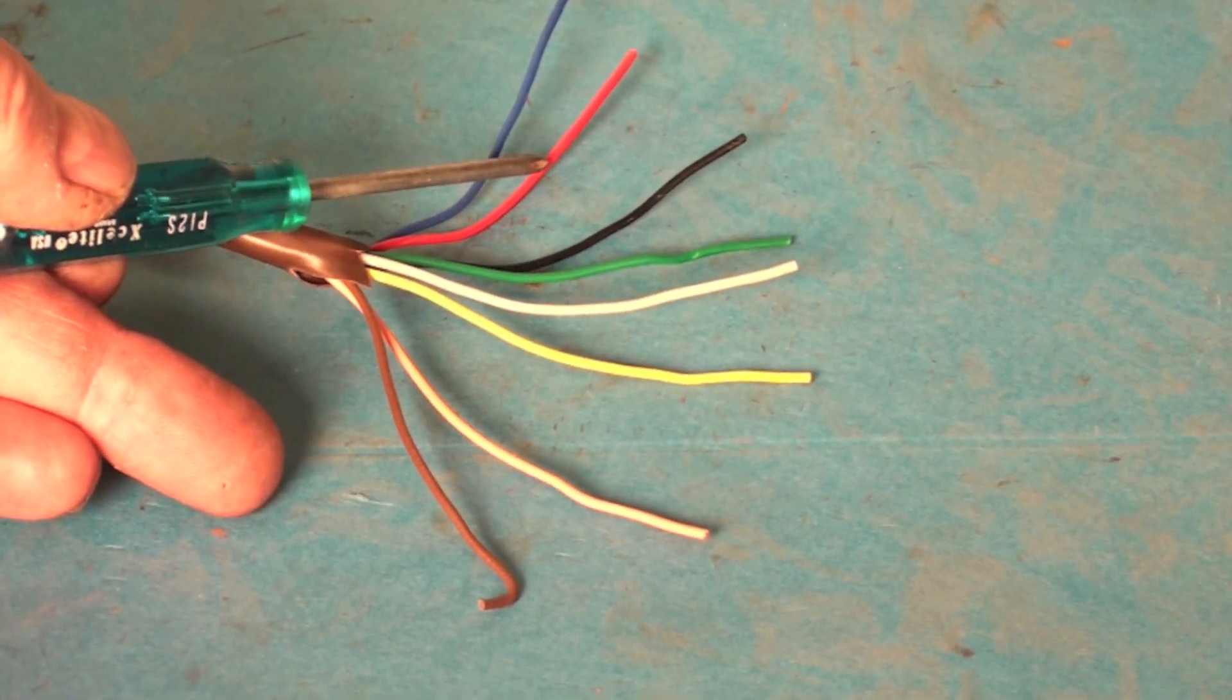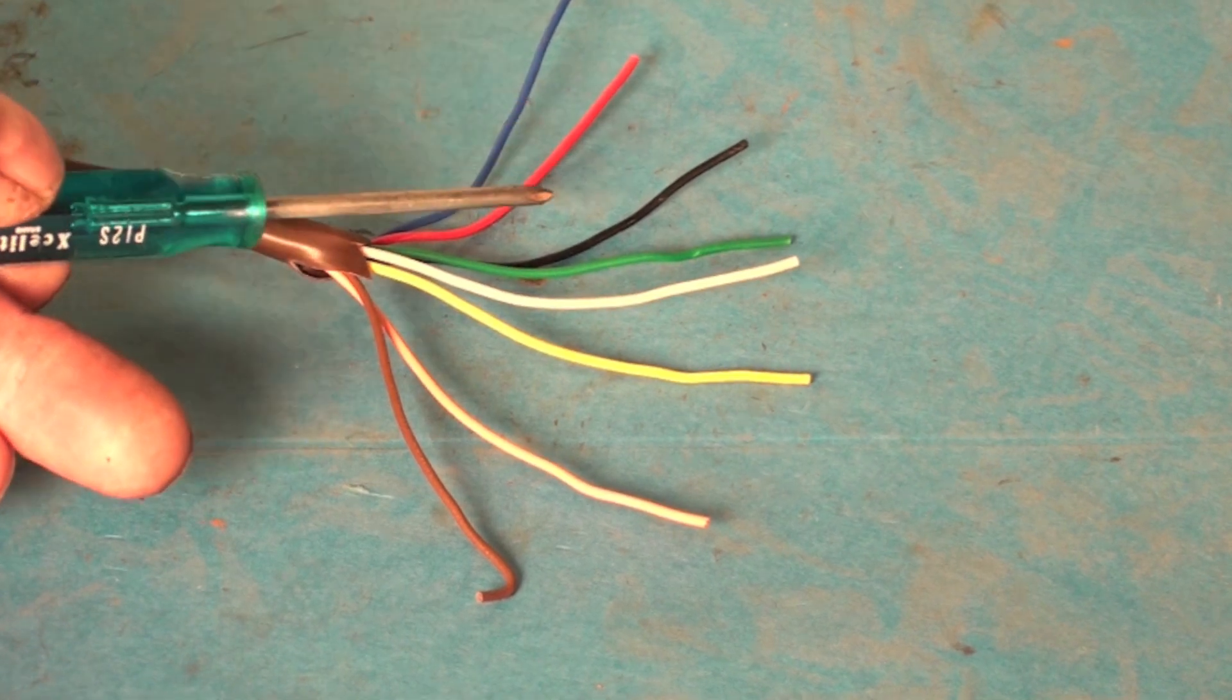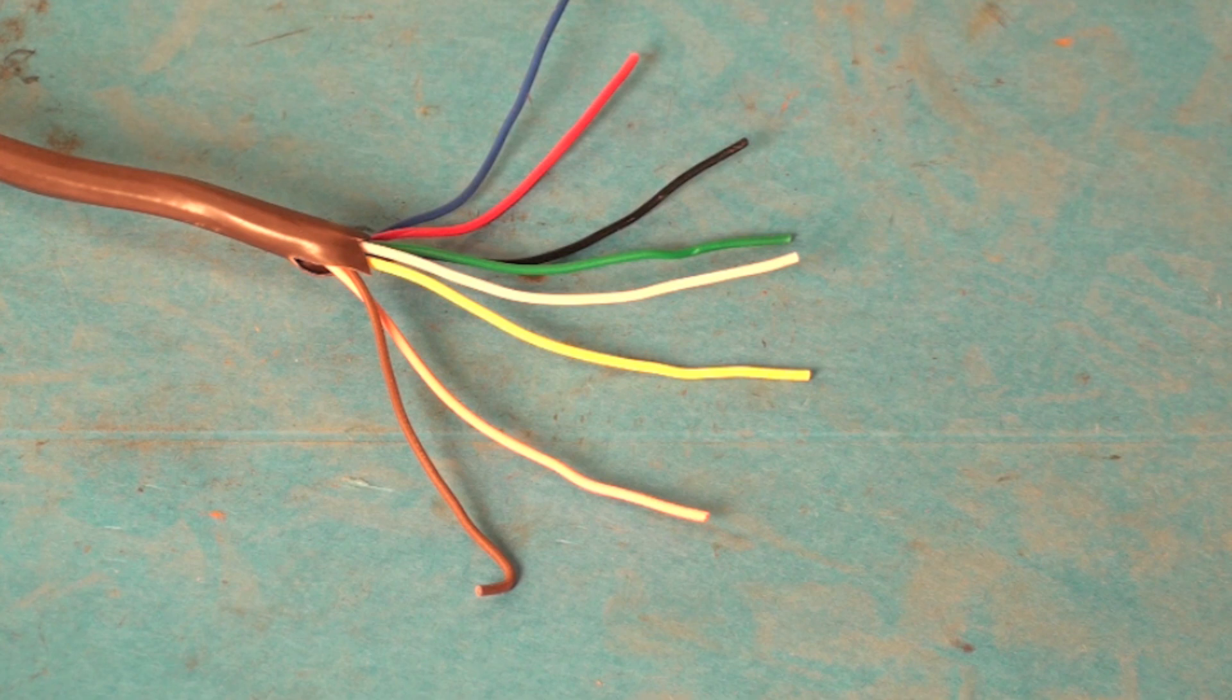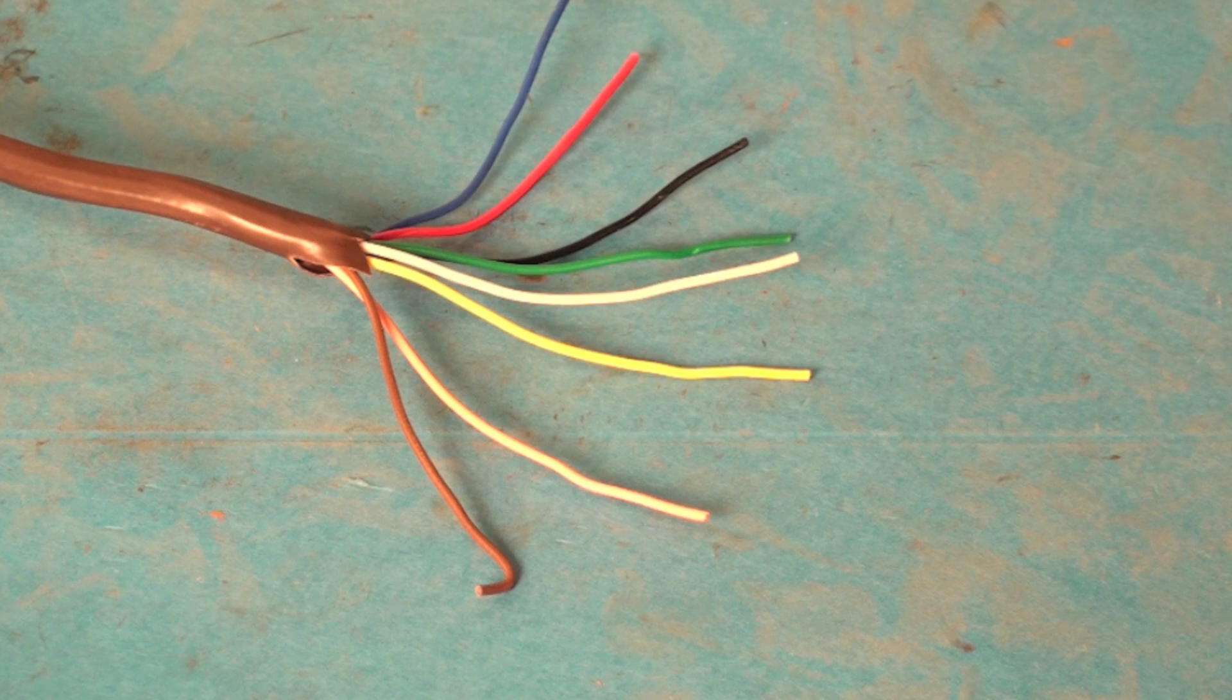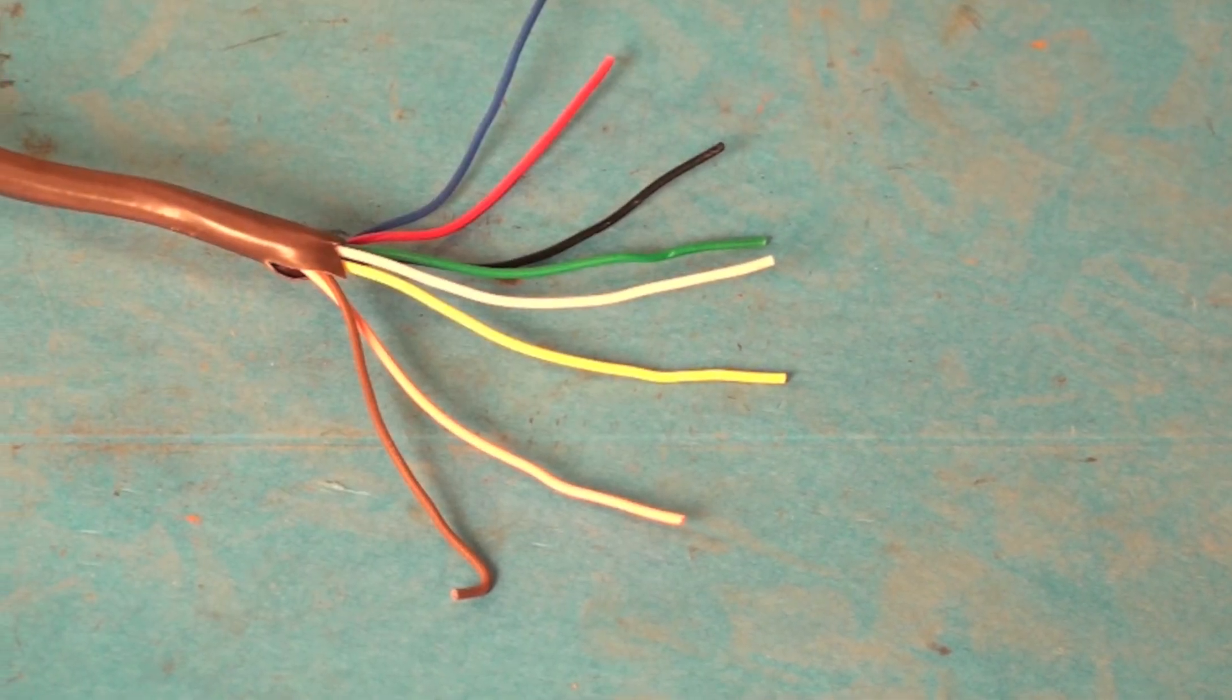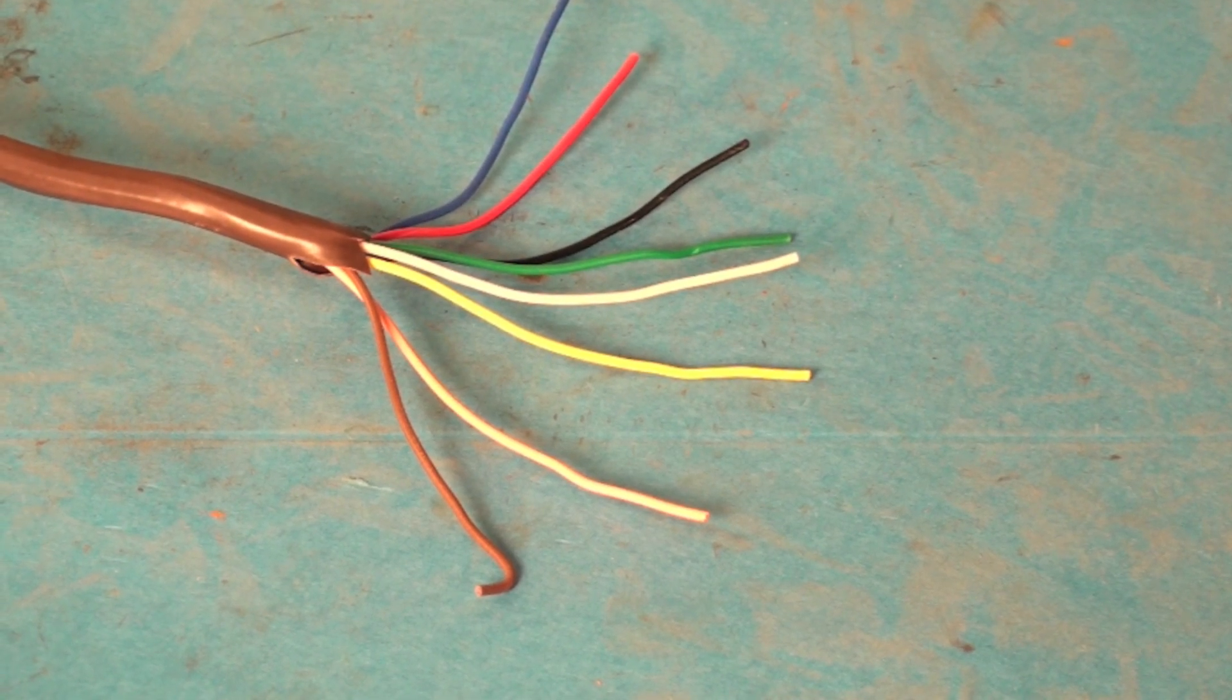Red is power. Blue is reversing valve energized in heat. Orange is reversing valve energized in cool. Black is common. Green is fan and white is heat. Yellow is cool. That's as close as I can get on this.